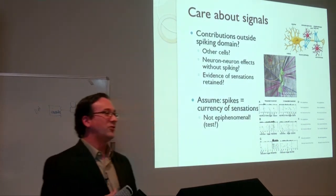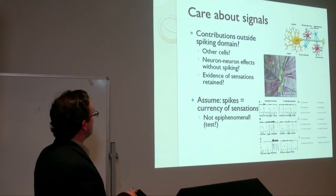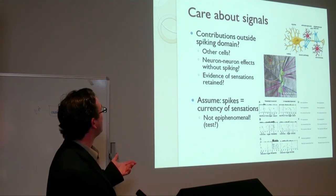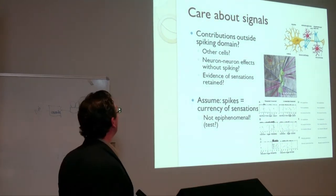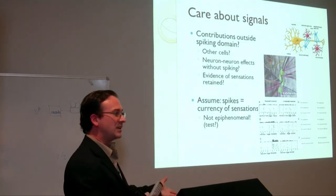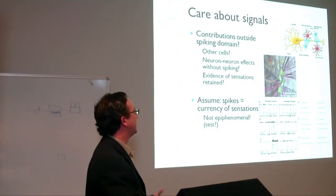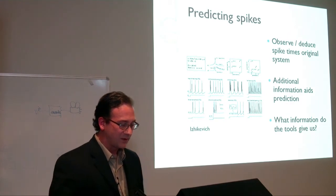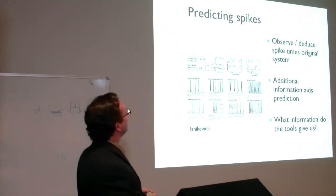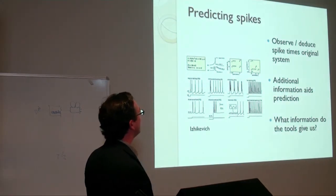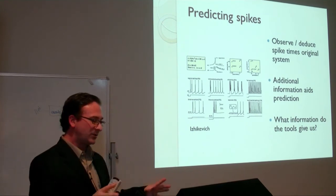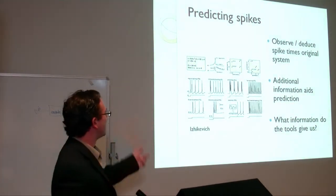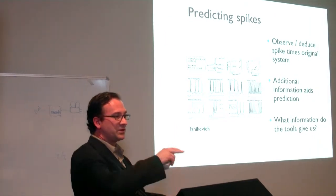Of course, the question is always whether it really matters — if electric fields are just an epiphenomenon of spiking, you may not be capturing anything extra. One way to test this: is there any evidence of mental functions sustained when spiking is suppressed, or absent when other factors are removed? If so, there are other factors to consider. For now, we'll assume spikes are everything. The more information we have, the better: one big difficulty is observing all that spiking in the original system so we can learn from it and predict it.